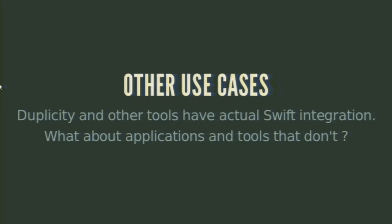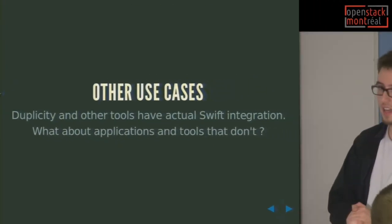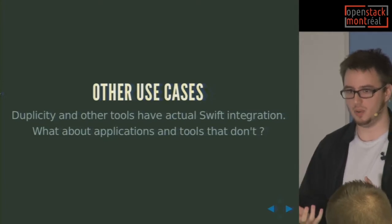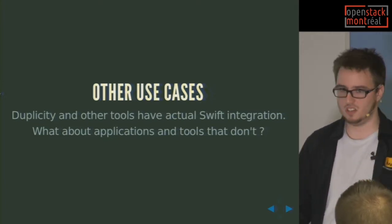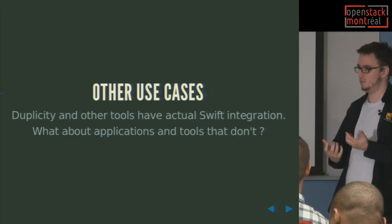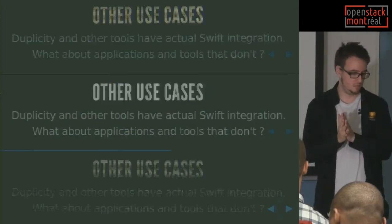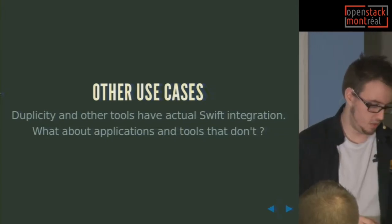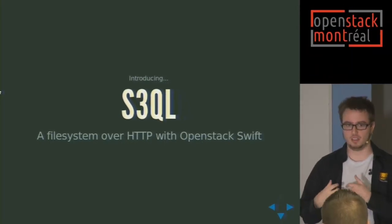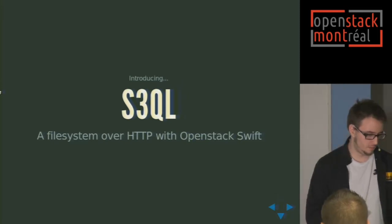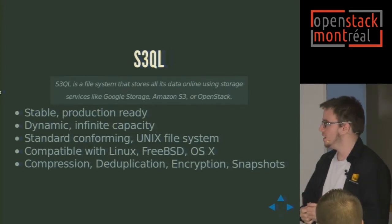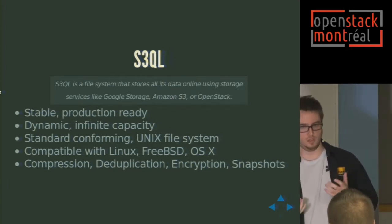Let's talk about other use cases with Swift. There's Duplicity, and there are a lot of tools out there that have native integration with Swift and work with it out of the box. But you have other applications, software, and tools that you might want to use with Swift but they don't know how to talk to it, so you need to find a way to abstract Swift. That's why there's a project called S3QL — I call it the file system over HTTP with OpenStack Swift. OpenStack Swift is just one of the backends for S3QL — you also have Google Storage and Amazon S3, but it happens to work with OpenStack Swift as well.